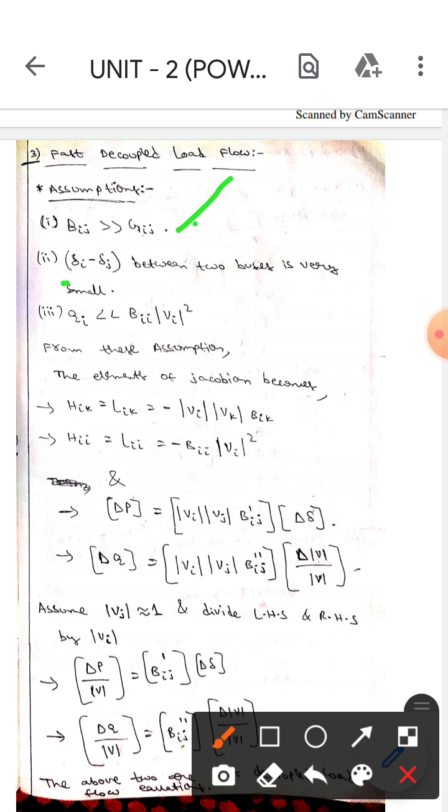The second assumption is that delta i minus delta j between two buses is very small. And the third is that Qi is very less than Bii into modulus of V squared. From these three assumptions, the elements